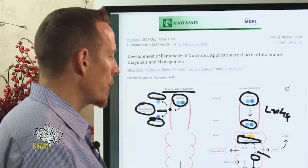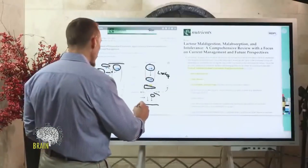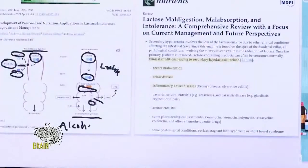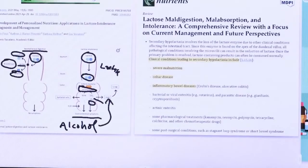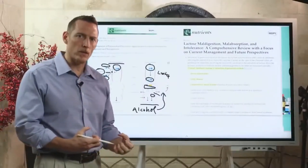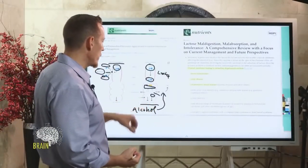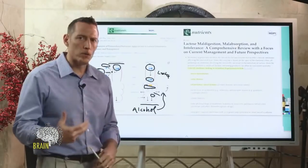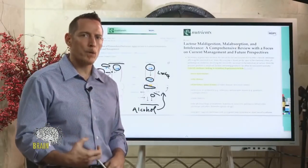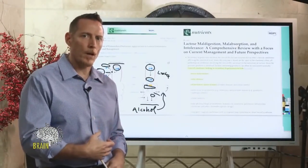One byproduct of fermentation that's rarely discussed is alcohol. Alcohol travels to the liver and can damage it over time. The more you rely on bacteria to ferment your food instead of digesting it with digestive enzyme power, the more potential for alcohol production. There's actually a condition called auto brewery syndrome, where the body produces its own fermented alcohol.